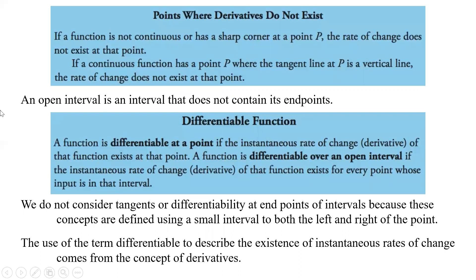Points where derivatives do not exist: if a function is not continuous or has a sharp corner at some point p, then the rate of change does not exist at that point. Also, if a continuous function has a point p where the tangent line is vertical, that also does not have a rate of change that exists. Those are two examples where the rate of change or derivative does not exist.